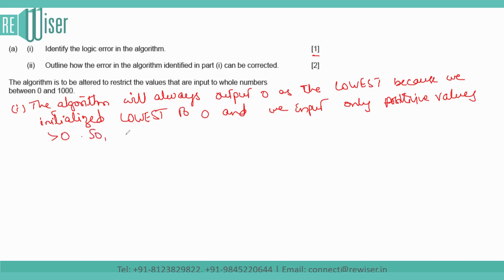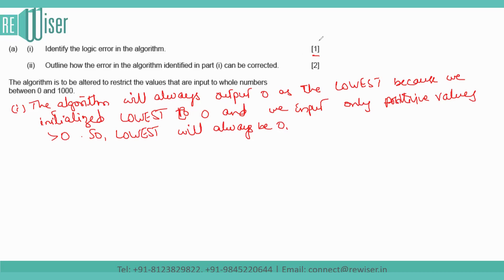This is the explanation: we assumed 0 to be the lowest value and we are inputting non-negative numbers, so obviously those values are all greater than 0. Therefore the condition 'n less than lowest' will never occur — that will never happen — which is the reason lowest will remain 0 only. That's the logical error in the question.